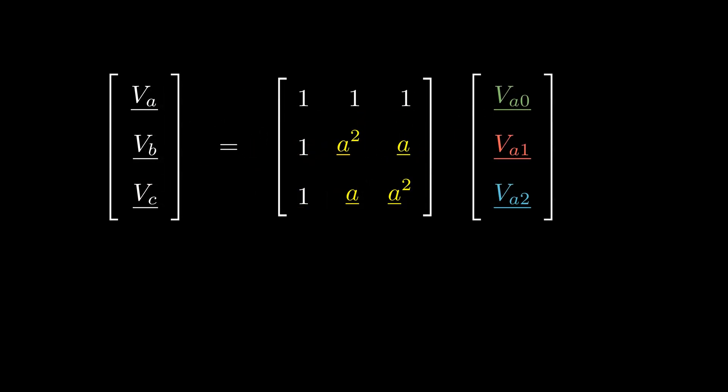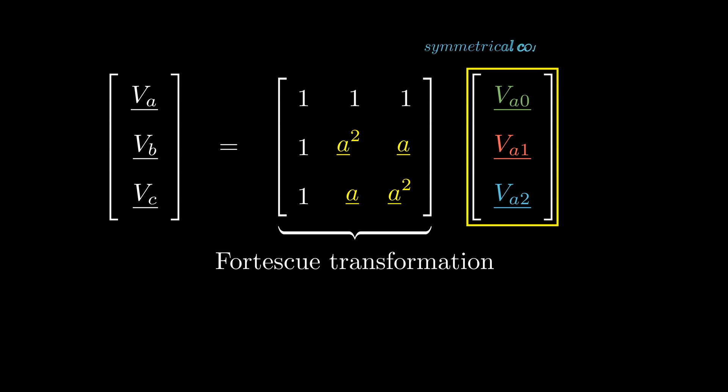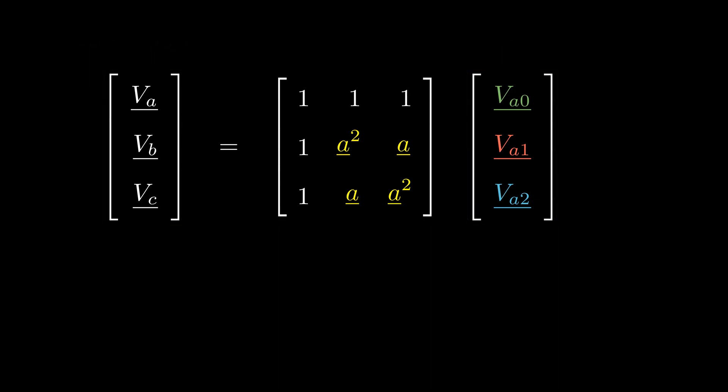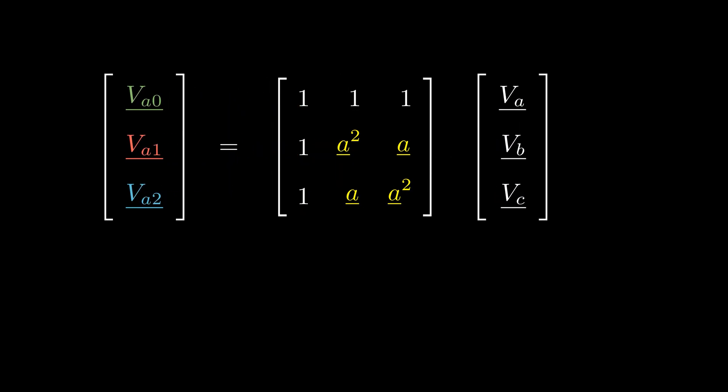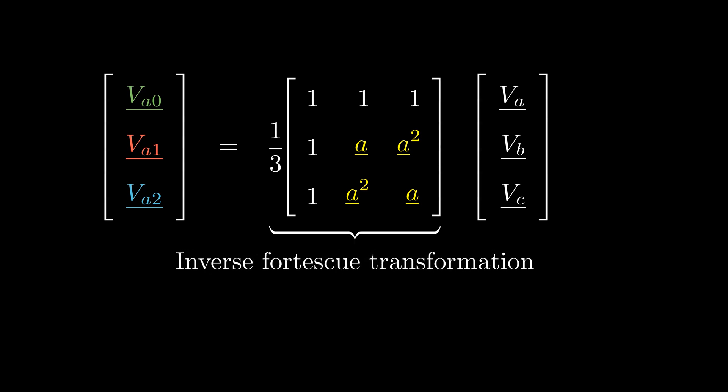We can now express these relationships as a matrix multiplication. This is known as Fortescue transformation. It converts the three symmetrical components into the original three-phase system. In practice, we often want to decompose an unbalanced system into its three symmetrical components to make analysis easier. To do that, we invert the matrix, giving us what is called the inverse Fortescue transformation.